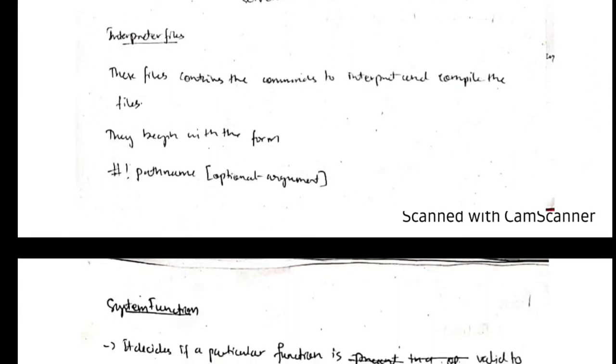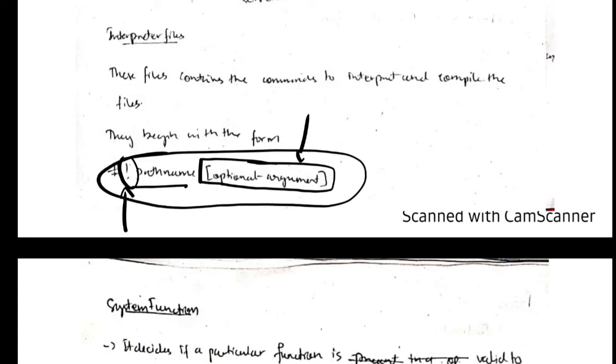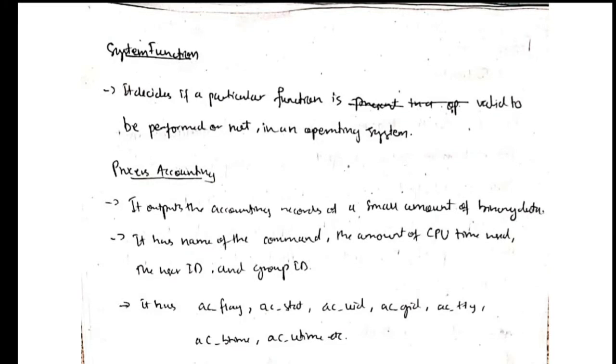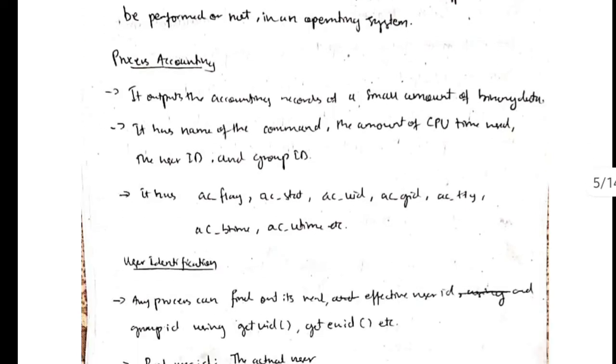When we want to interpret some file, we have to write the command using the exclamation mark and the path name, and if you have some optional arguments, we include them here. This type of command line indicates that it is an interpreter file. The system function checks if other functions are valid functions on an operating system or not. If you want to get the summary of what all resources are used and how much time each process took, we can use process accounting.